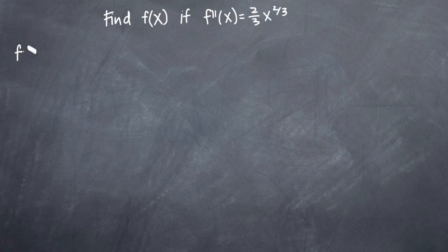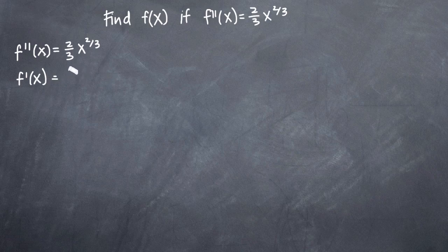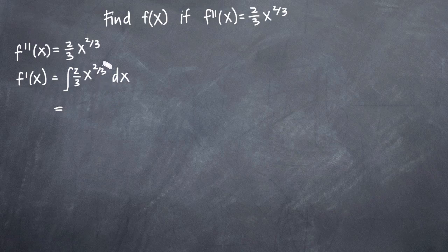If we have the second derivative f double prime of x equal to two-thirds x to the two-thirds, then to find the first derivative f prime of x, we'll take the integral of the second derivative: two-thirds x to the two-thirds, with the corresponding dx notation. To take the integral, we'll use simple power rule. Because we have x to the two-thirds, we'll add one to the exponent: two-thirds plus one, or two-thirds plus three-thirds, gives us five-thirds. So we'll get x to the five-thirds.